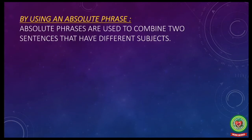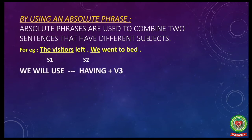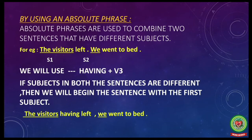Now we are going to use an absolute phrase for combining two or more simple sentences into one simple sentence. Absolute phrases are used to combine two sentences that have different subjects. For example: 'The visitors left. We went to bed.' The subject in sentence one is 'the visitors' and in sentence two it is 'we' — they are different. When subjects are different, we begin with the first subject and use 'having' plus past participle. The answer will be: 'The visitors having left, we went to bed.'